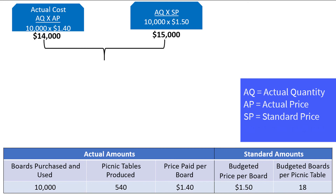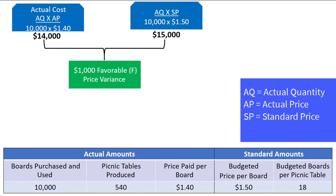$14,000 minus $15,000 equals a $1,000 price variance. We don't write negative or positive signs, but instead we label the variance as favorable or unfavorable. You can verify that this variance is favorable by examining the prices — the $1.40 purchase price is lower than the standard price of $1.50, so the company got a good deal on materials, which creates the favorable variance.